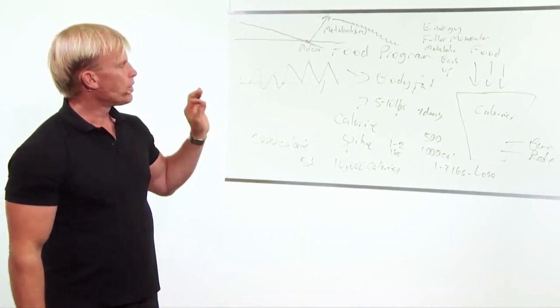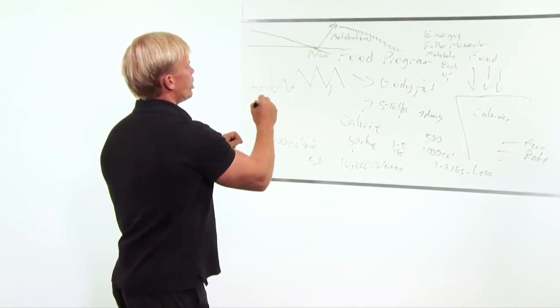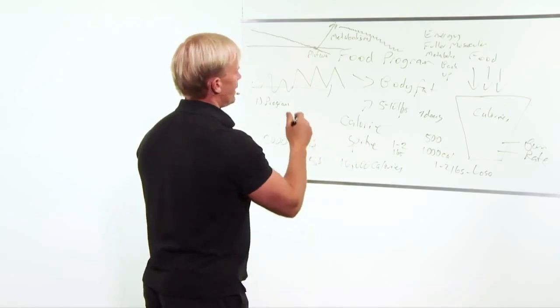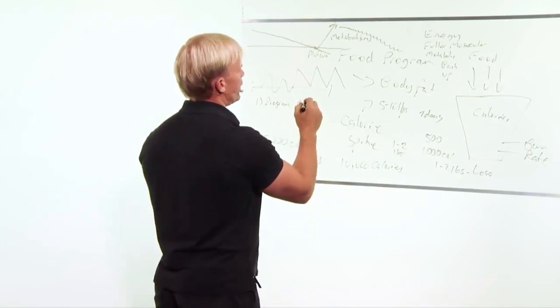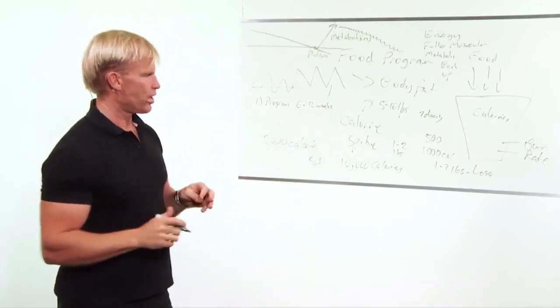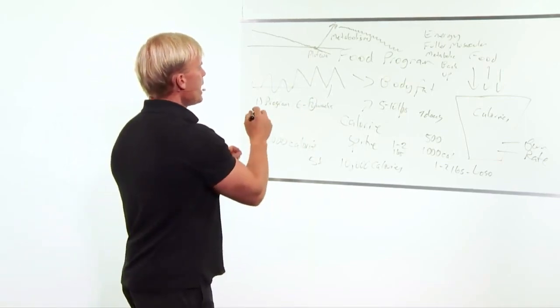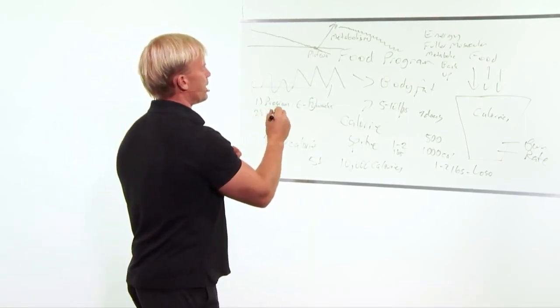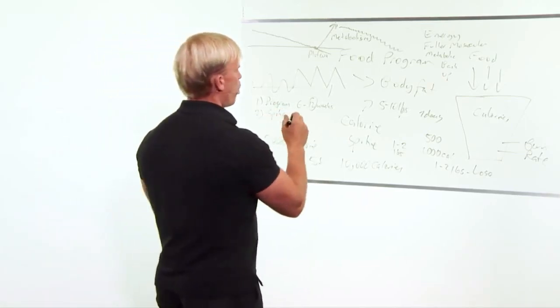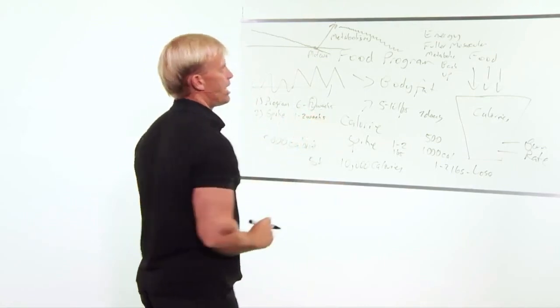The key to making this all work is number one, you need to stay on a calorie restriction for at least six weeks and usually 12 weeks. That's long enough to metabolically set. For the most part, most people would be in this range. It depends how much weight you have to lose. The second thing is you only spike, and I do this on biofeedback, once every one to two weeks. That's the magic zone.